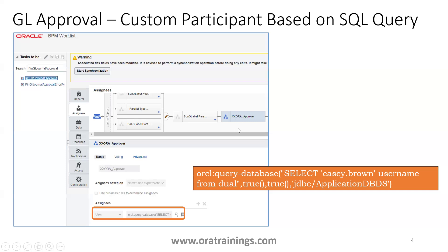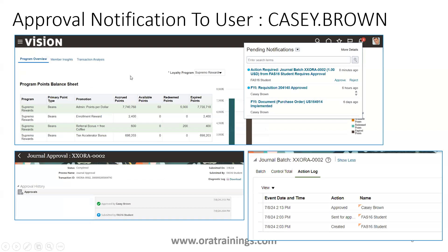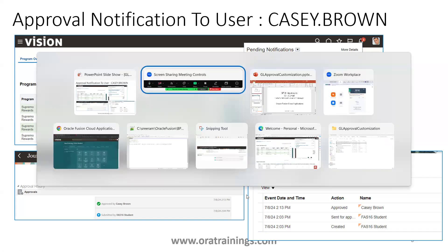Once this assignee logic is enabled for this participant, we can create a journal. Once you create a journal you should be able to see it in the transaction monitor. I created a journal called XX-0002 and you can see the assignee is cassie.brown. Logged in as cassie.brown, I clicked Approve, and in the transaction monitor we can see it was submitted by fas16.student and approved by cassie.brown. From the journal level we can also see it got approved by cassie.brown.